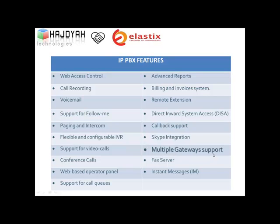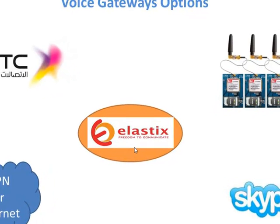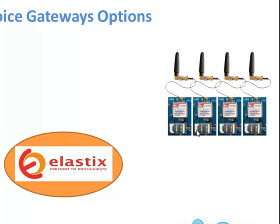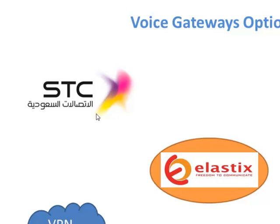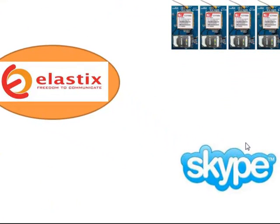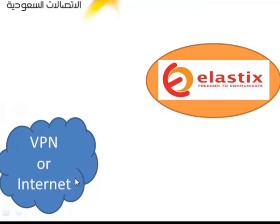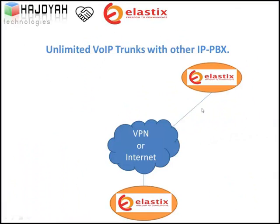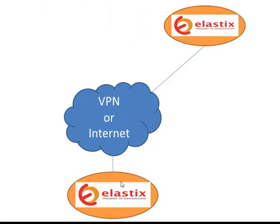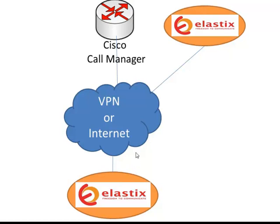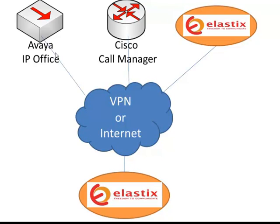Multiple Gateway Support: Elastisk supports multiple gateway options. It can connect with SIM cards, work with telecom service providers like STC to get E1/T1 or SIP trunks, connect to Skype for calling offers, connect to the internet for remote extensions via soft phone, and connect via VPN to enable voice over IP between branches. Elastisk can also interoperate with other branches running Cisco Call Manager, Avaya IP Office, or other systems.